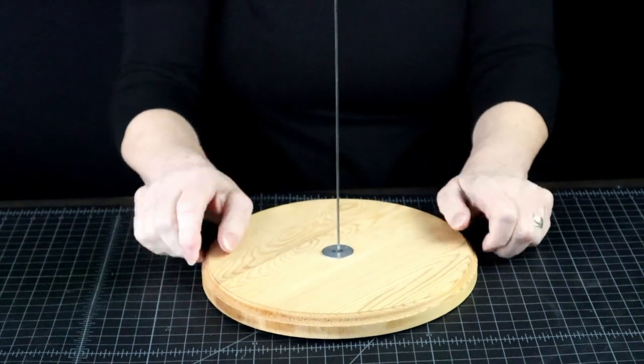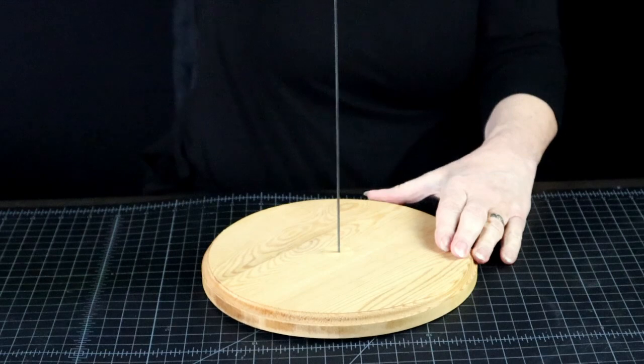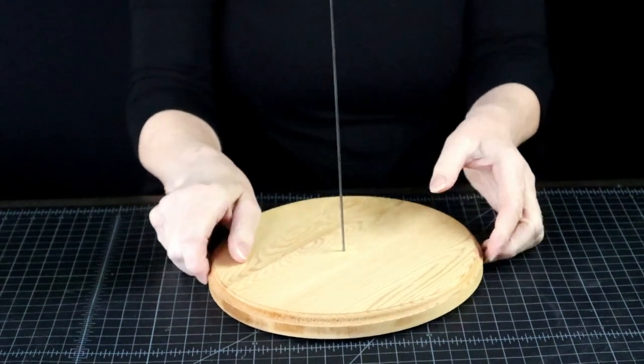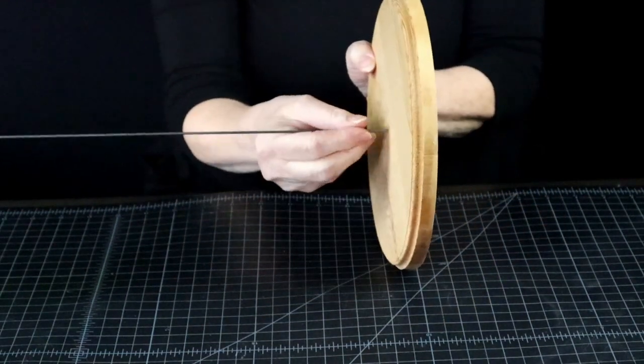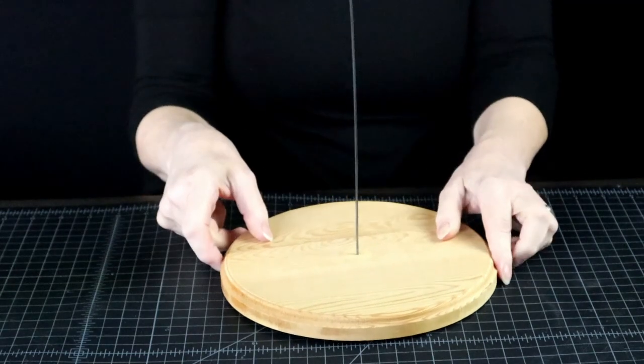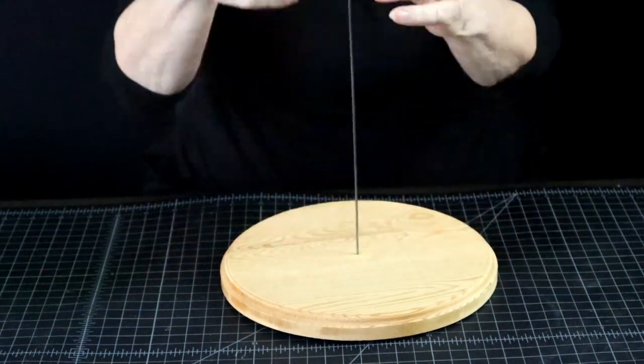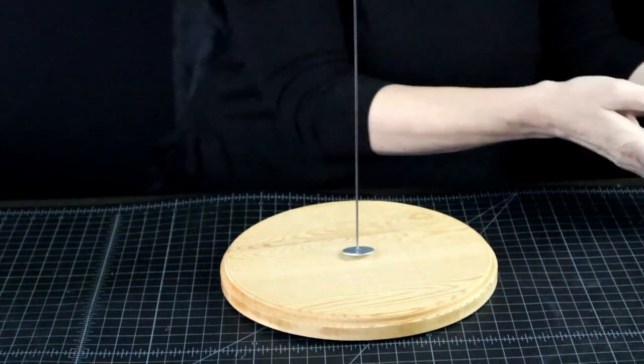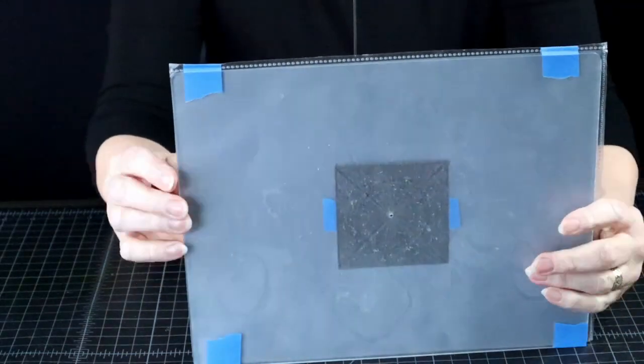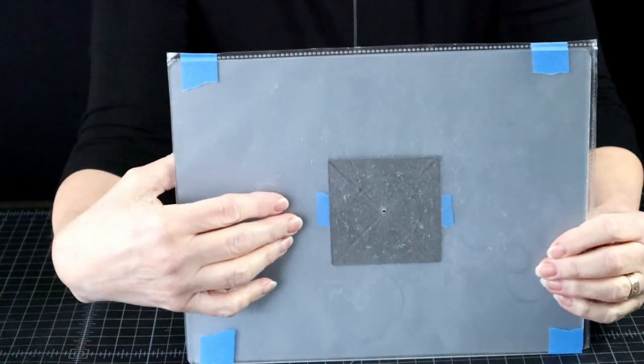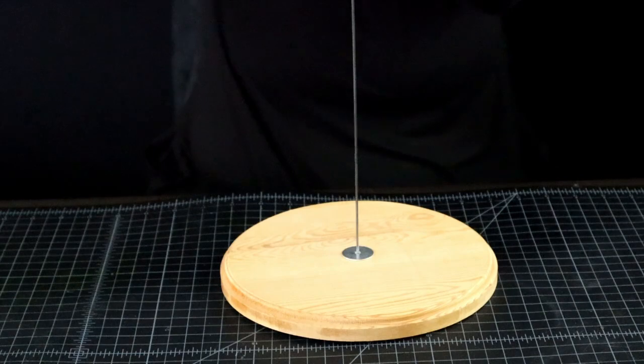We'll use the same equipment as we did for making the cube in the previous video. Just a simple piece of wood with a perpendicular wire stuck in it. Then of course, you will also need a hole in your work surface. I use plexiglass sprayed with matte acrylic finish.